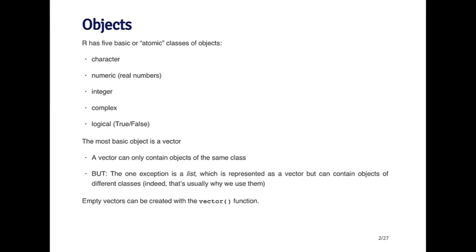The vector function has two basic arguments. The first argument is the class of the object, the type of object that you want to have in the vector. And the second argument is the length of the vector itself.